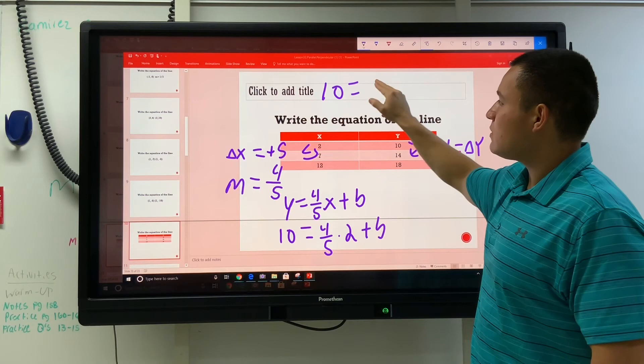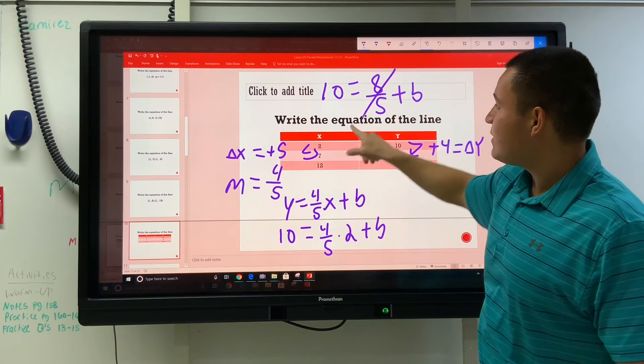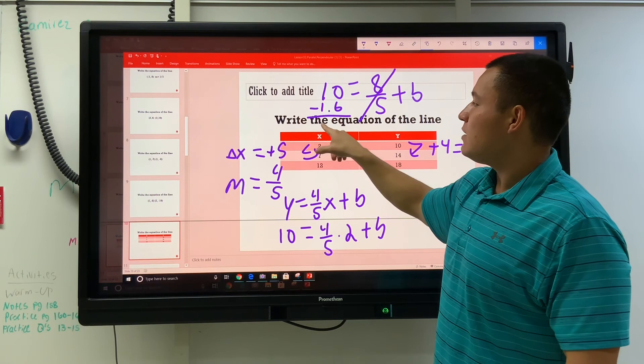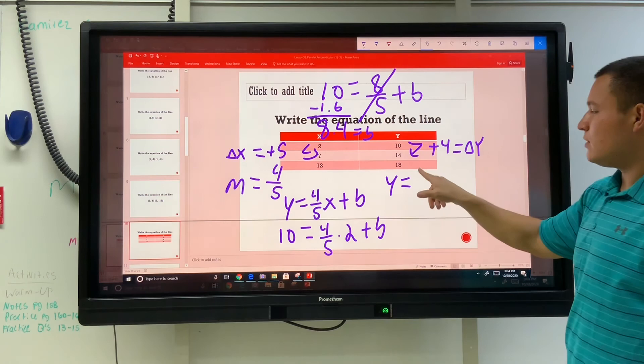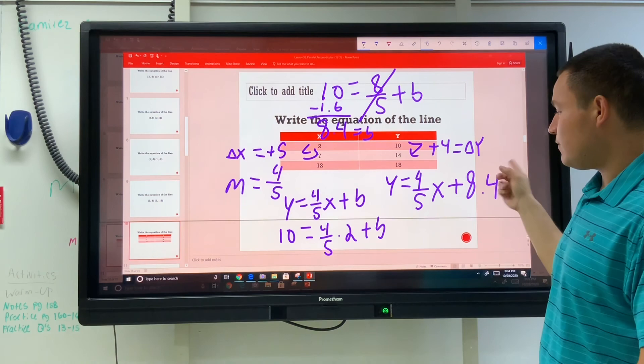Okay, let's do it. 1.6 equals 8 fifths plus b. That's 1.6. So I'm going to subtract 1.6 from 10. I'm going to subtract this number, which is 1.6, from 10. And I'm going to get 8.4 equals b. y is equal to 4 fifths plus 8.4, or this could be 8 and 2 fifths. 8.4 would be 8 and 2 fifths.